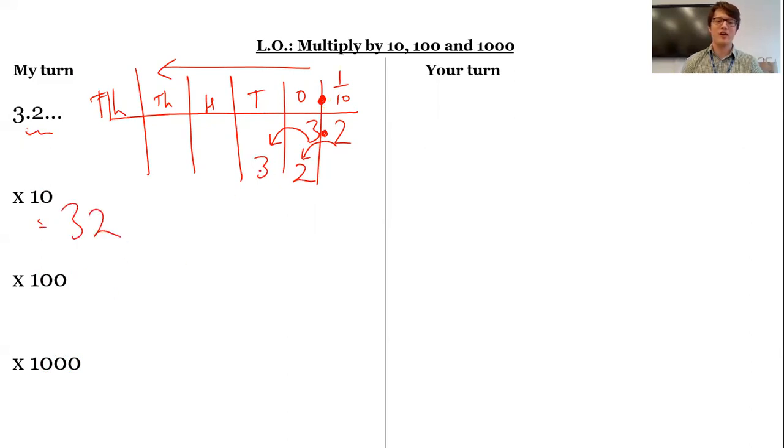Times it by 100, I need to move another column over, so two columns. I'll have gone one, two, so I've now got 300. Two tens, so now I need a placeholder in the ones, and hopefully you can predict.